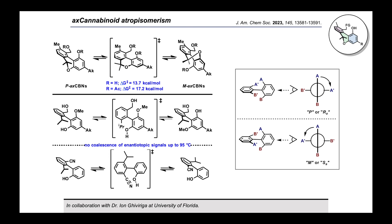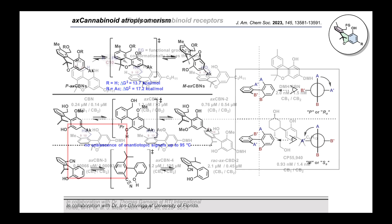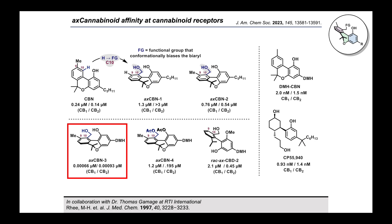In collaboration with the laboratory of Dr. Thomas Gamage at RTI International, we were able to examine a small series of ax cannabinoids for binding affinity and functional activity at the human cannabinoid receptors CB1 and CB2. From this initial series, AXCBN3 exhibited sub-nanomolar affinity for both receptors, approximately 360-fold greater than CBN at CB1 and 134-fold greater at CB2. When compared to the dimethylheptyl analog of CBN reported by Rhee and coworkers, AXCBN3 has approximately 5 to 10-fold higher affinity, suggesting that the addition of the C10 functional group, which biases the biaryl to a non-planar conformation, confers additional beneficial interactions with the cannabinoid receptors.